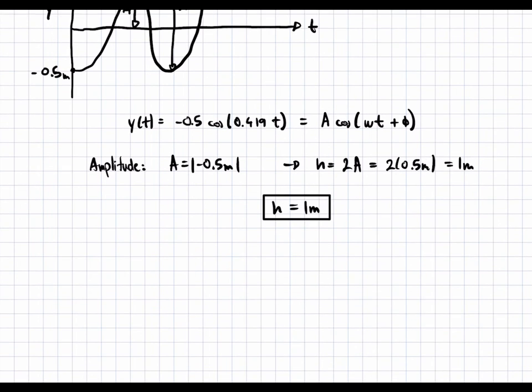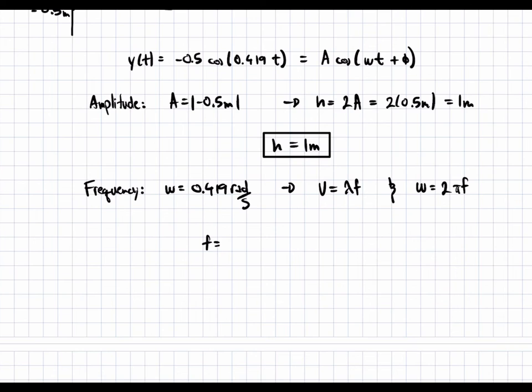Now, let's look at the frequency. So we know that omega is equal to 0.419 radians per second. And we know that velocity is equal to lambda f. We have lambda, but we don't know f. But we can derive f from omega, because omega equals 2 pi f. So we know that the frequency f is going to be equal to omega over 2 pi, which is equal to 0.419 divided by 2 pi, which is equal to 0.0667 hertz.